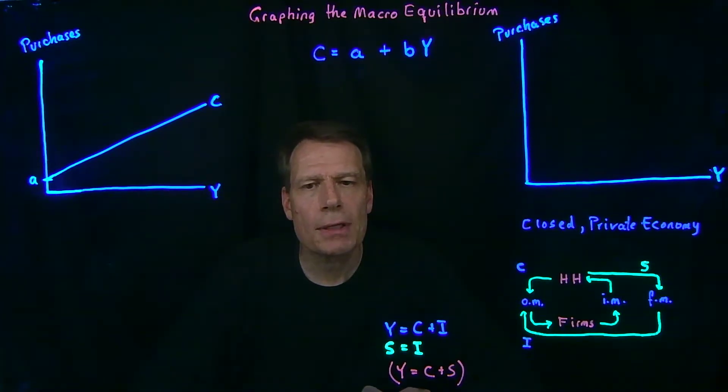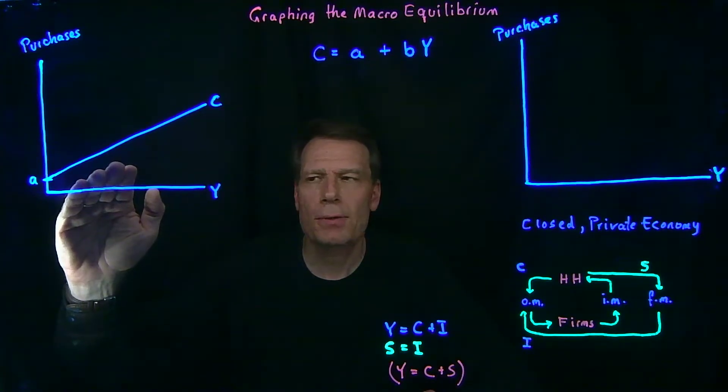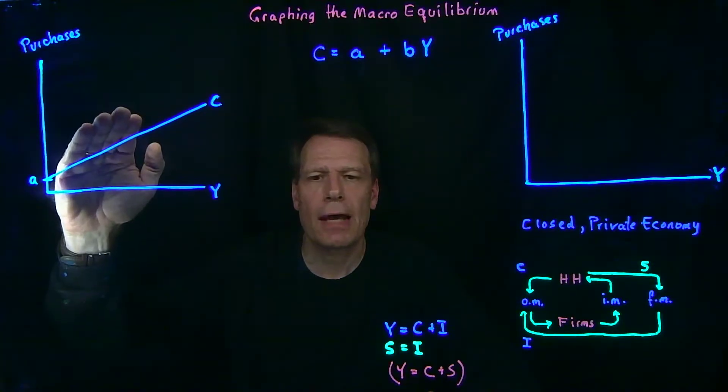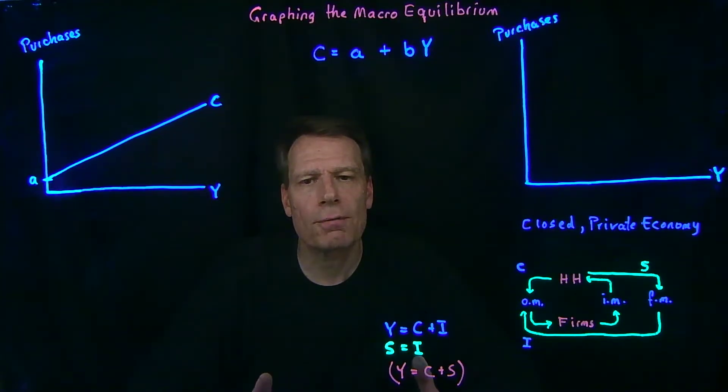But we've assumed that investment is exogenous. It doesn't change with the level of income in the economy. So to add exogenous investment to this, we just have to shift the line up parallel by the amount of the investment that doesn't change as income changes.